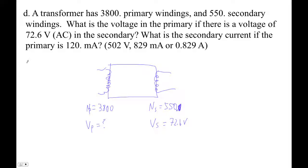So let's set up our voltage thing. This is just V primary over V secondary equals N primary over N secondary, right? So V primary over 72.6 volts equals 3,800 over 550.